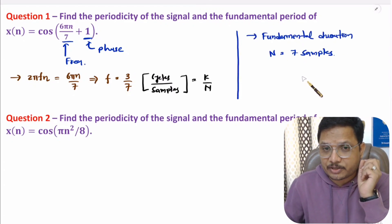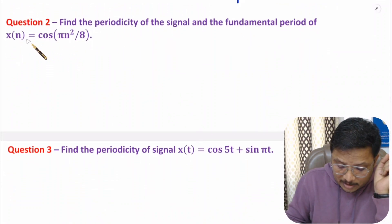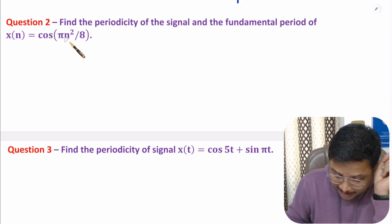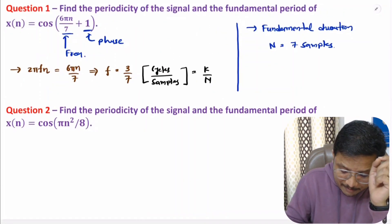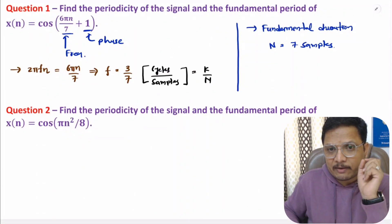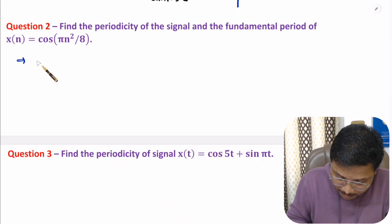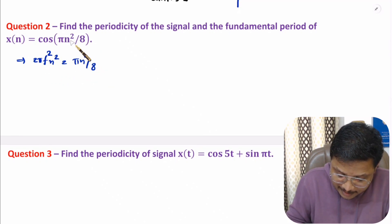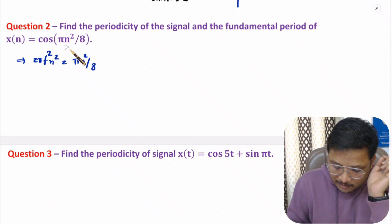Now I will explain the second interesting question. We need to identify the periodicity and fundamental period of x(n) = cos(πn²/8). Here we have n² instead of n. To identify the frequency, we compare the phase as per 2πf²n², which equals the given phase. If we had n³, we would use 2πf³n³. The reason is the exponent of n determines the form we use.